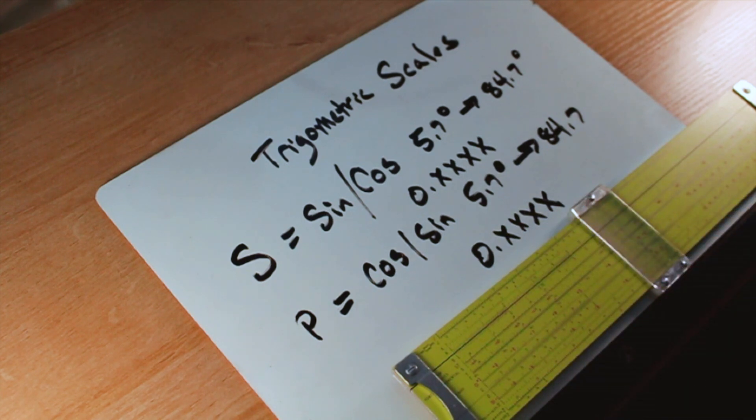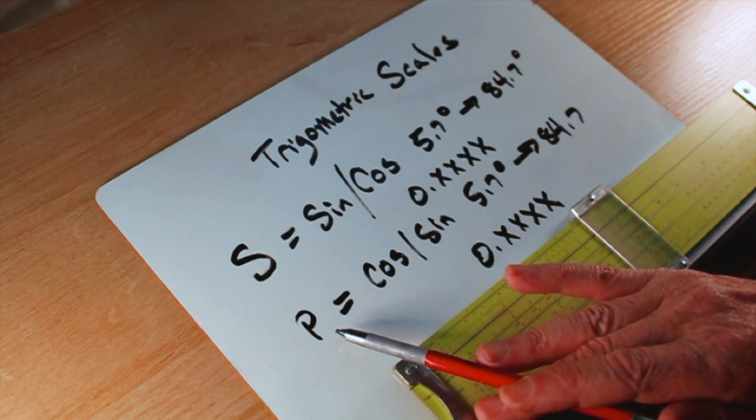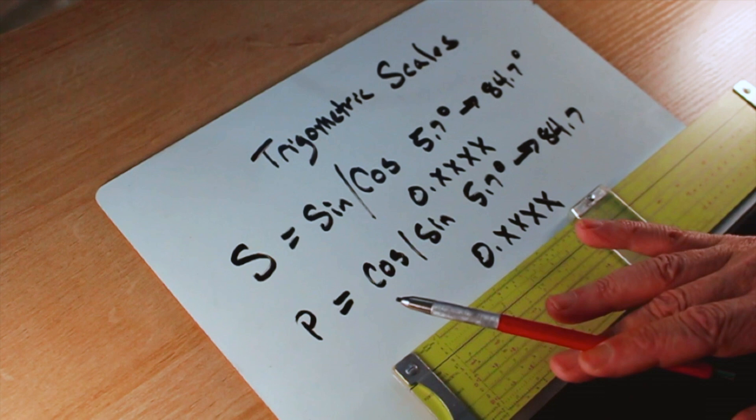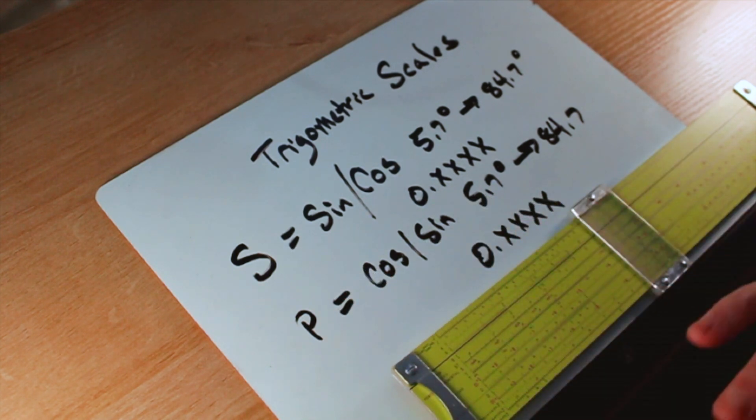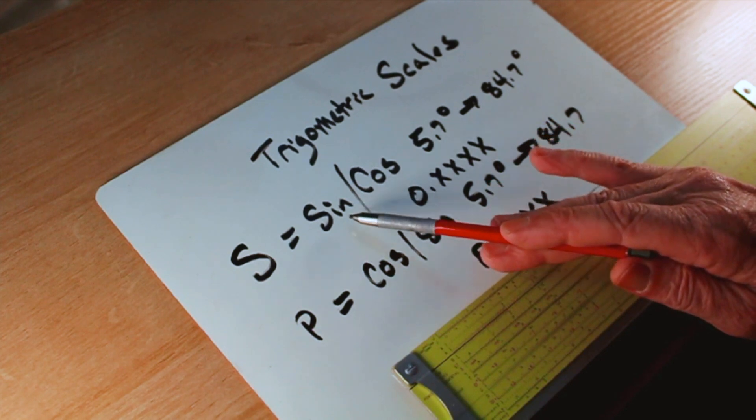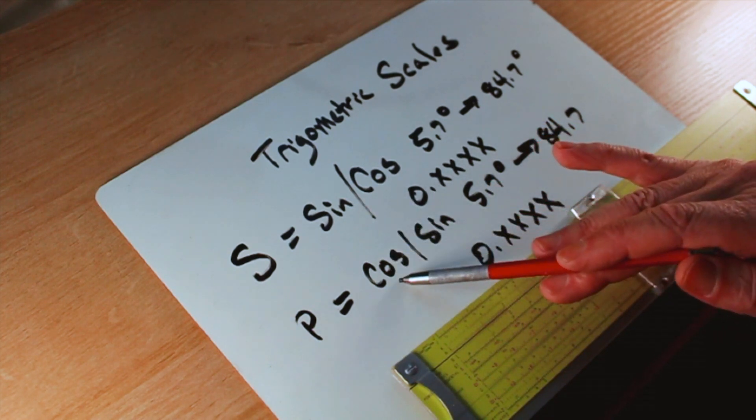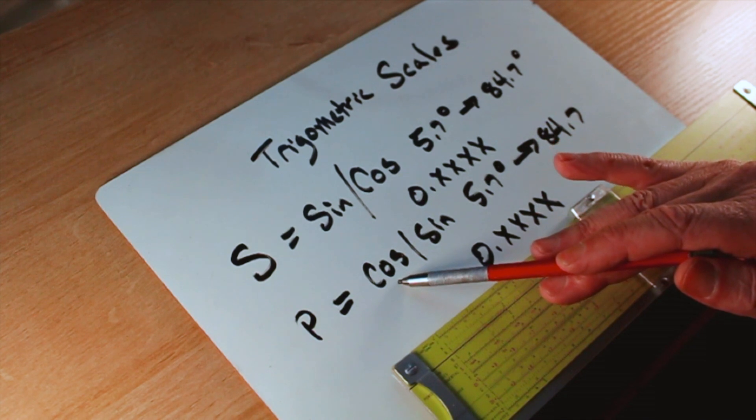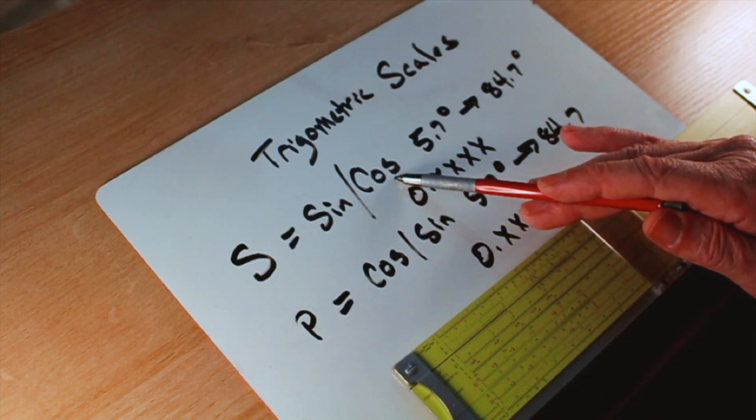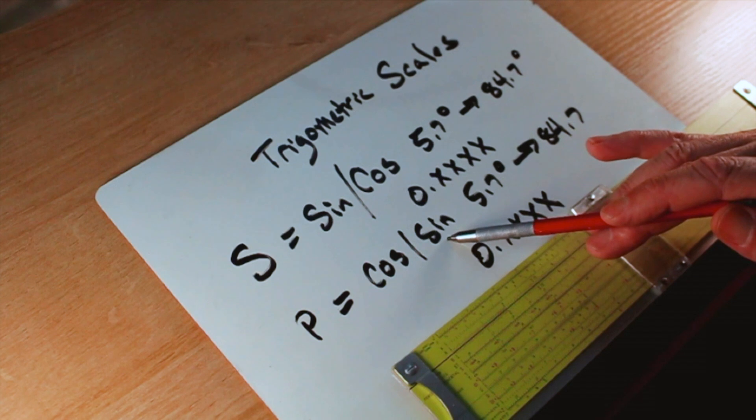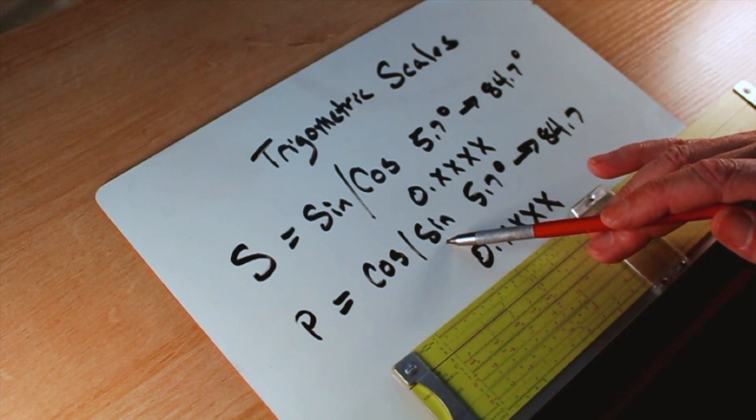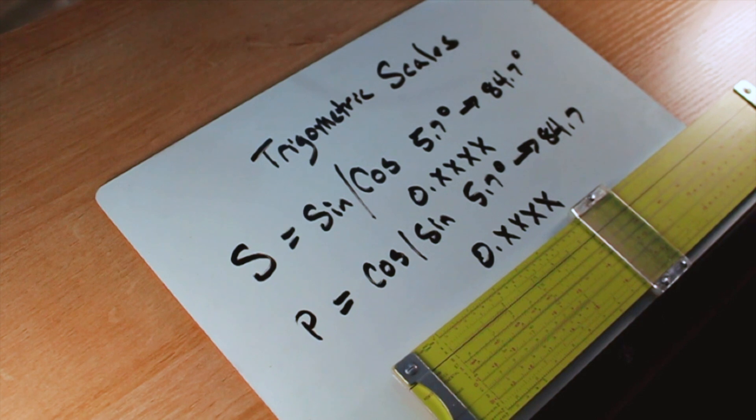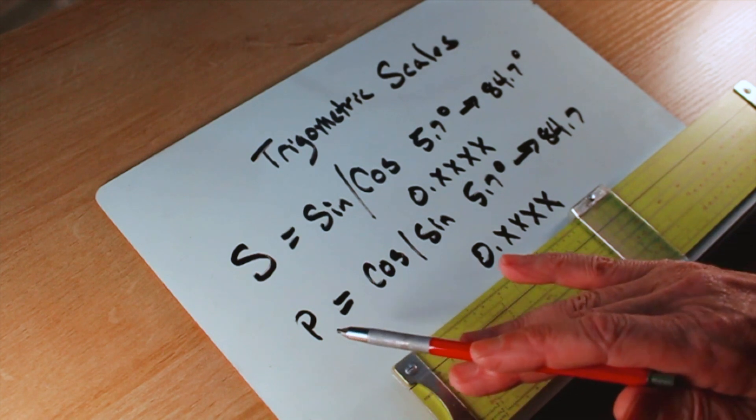On some slide rules, especially European slide rules, but not so much American or British ones, you'll see something called a P-scale. The P-scale is very similar to the S-scale. If you're looking at the sine of a number on the S-scale, if you read straight down without moving the cursor, you can read off the cosine of the same angle. It's a very convenient scale to have. Everything else being equal between two slide rules, if I had a choice of getting a P-scale, I would take that one.